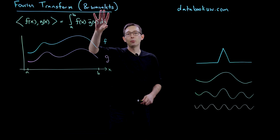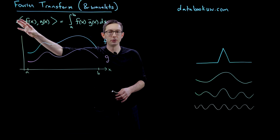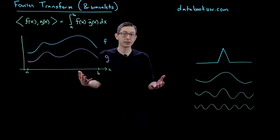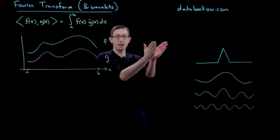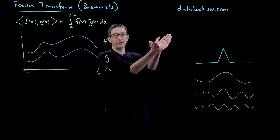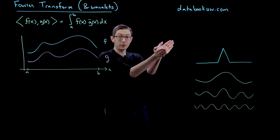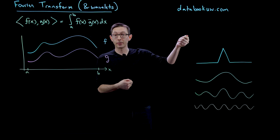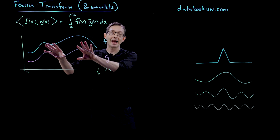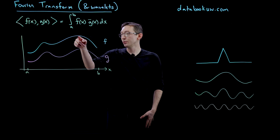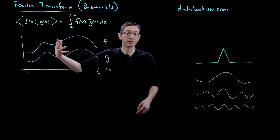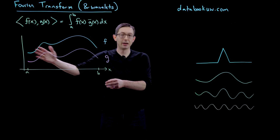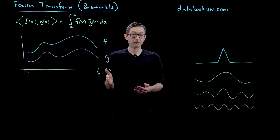So this is how we define the inner product of two functions. This essentially tells me how similar these two functions are — just like the inner product of vectors tells me whether my two vectors are orthogonal (inner product is zero) or very well aligned (large inner product). It's exactly the same thing with functions. The two I drew here are very close to each other, so they should have a large inner product when I multiply them and integrate from a to b.